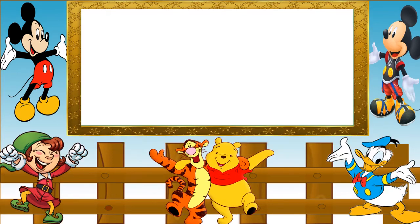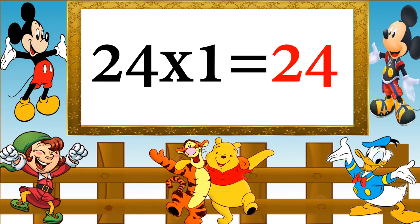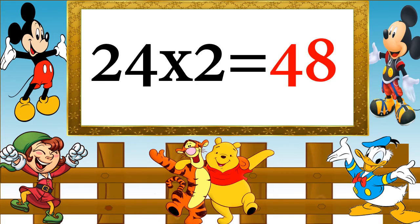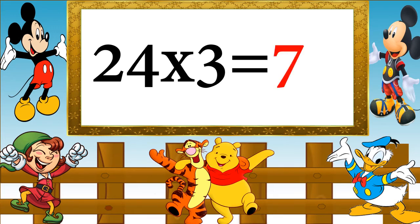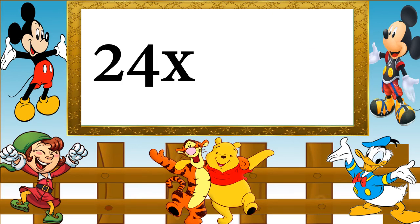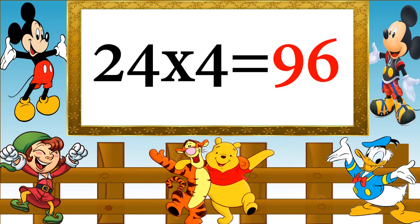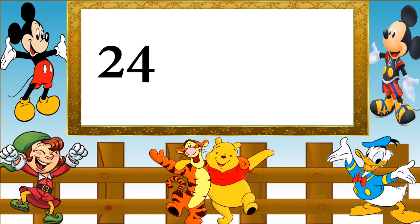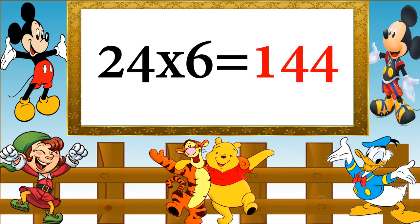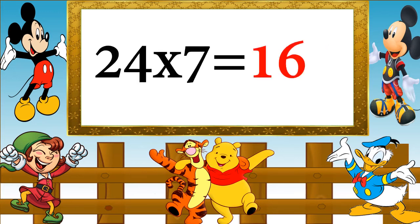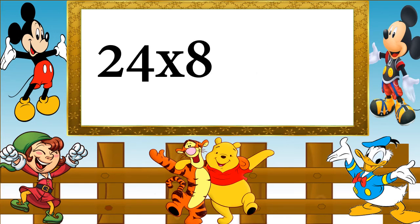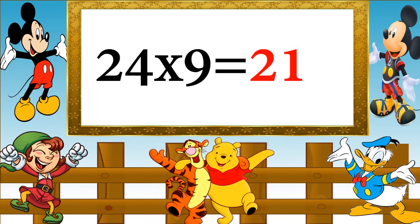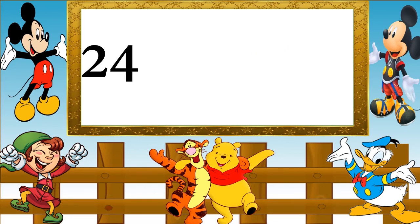Table of 24. 24 ones are 24, 24 twos are 48, 24 threes are 72, 24 fours are 96, 24 fives are 120, 24 sixes are 144, 24 sevens are 168, 24 eights are 192, 24 nines are 216, 24 tens are 240.